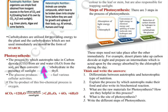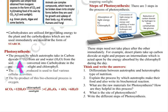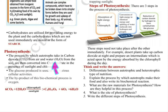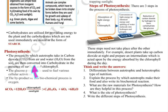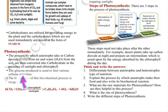Photosynthesis is the process by which autotrophs take in carbon dioxide from air and water from the soil and convert them into carbohydrates in the presence of sunlight and chlorophyll. In this process we need two things: carbon dioxide, which enters the leaf through stomata, and water, which is absorbed from the roots and soil. These two react in the presence of sunlight and chlorophyll — chlorophyll acts as a biocatalyst — to convert CO2 into carbohydrates like glucose. The by-product of this biochemical process is oxygen, which we use for our own respiration.